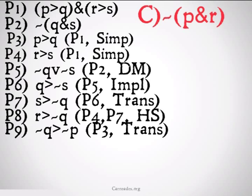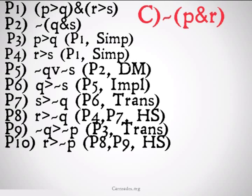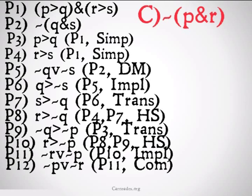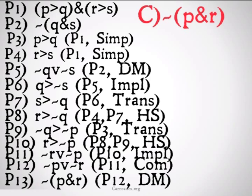Then, we can transpose our original premise three, not Q implies not P. And then, set up another hypothetical syllogism, R implies not P. We can do implication to get not R or not P. Switch that around so it's going to look exactly like our conclusion with commutativity. And finally, we will finish with a DeMorgan's rule to get it's not the case that P and R.